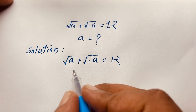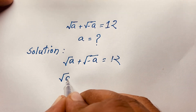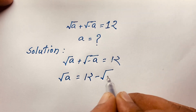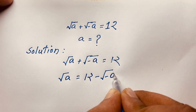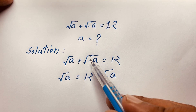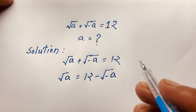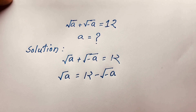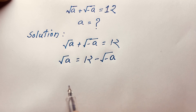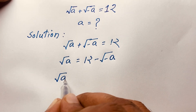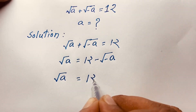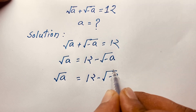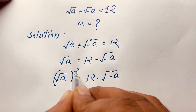I can see this expression — it will be square root A is equal to 12 minus square root negative A. I move this positive square root negative A to this side, so it will be negative. Now I will use both sides whole square.